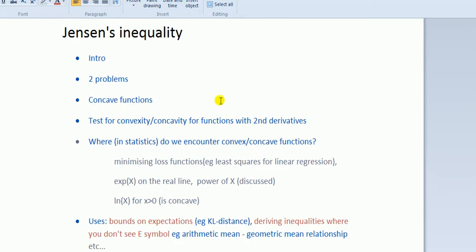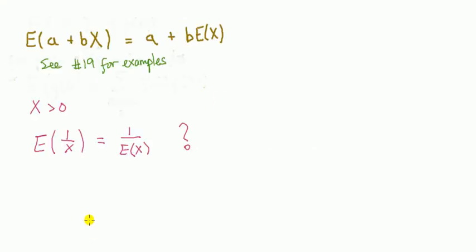And this is one instance where we can apply Jensen's inequality. To get you thinking about expectations, consider this. Expected value of constant a plus constant b times a random variable X, then you know that this holds. Look back at video problem 19 for examples when applying this.